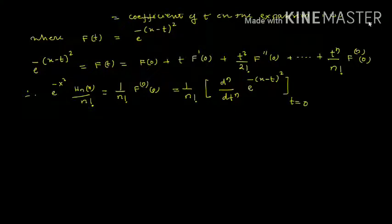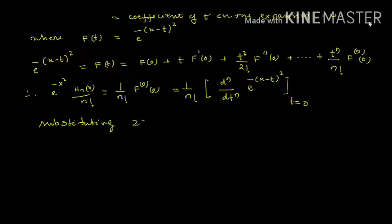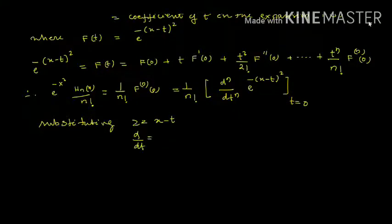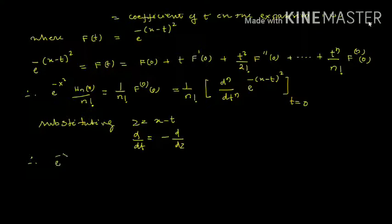Now we substitute z = x - t. Taking the derivative, dz = -dt, so d/dt = -d/dz, taking variable x as constant. This gives e^(-x²) times Hn(x) divided by n! equals 1/n! with d/dt replaced by -d/dz.